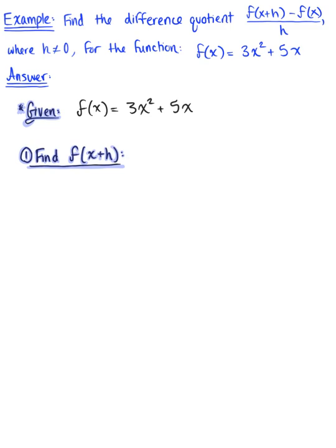How are we going to do this? We look back at our original function, and everywhere you see an x, you're going to replace that x with x plus h. I encourage you to use parentheses for your safety. So we have f of x plus h is equal to 3 multiplied by x plus h squared plus 5 times x plus h.